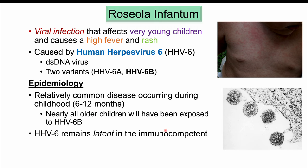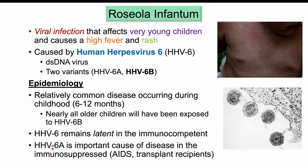HHV6 remains latent in immunocompetent individuals — after clearing the infection, it stays in an essentially inactive state. HHV6A, the variant that doesn't cause roseola infantum, is an important cause of disease in the immunosuppressed, such as patients with AIDS and transplant recipients. A useful mnemonic: roseola is called sixth disease because it's caused by herpesvirus 6. For the two variants, remember B for baby (HHV6B causes roseola) and A for adult (HHV6A affects older, especially immunosuppressed, adults).